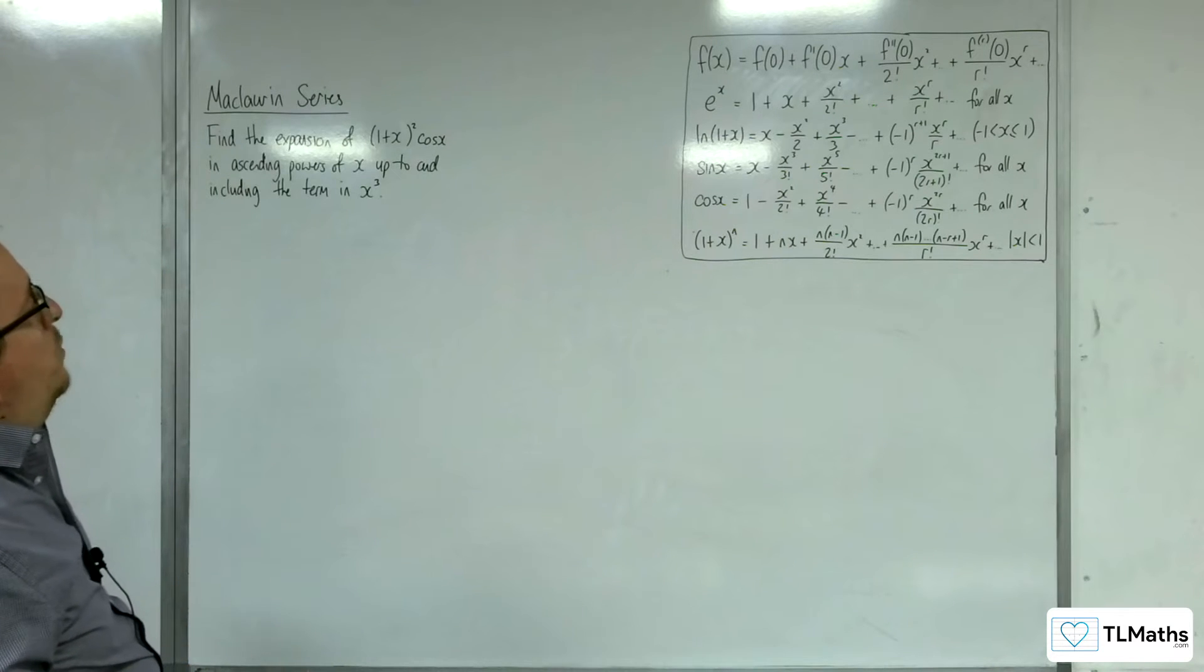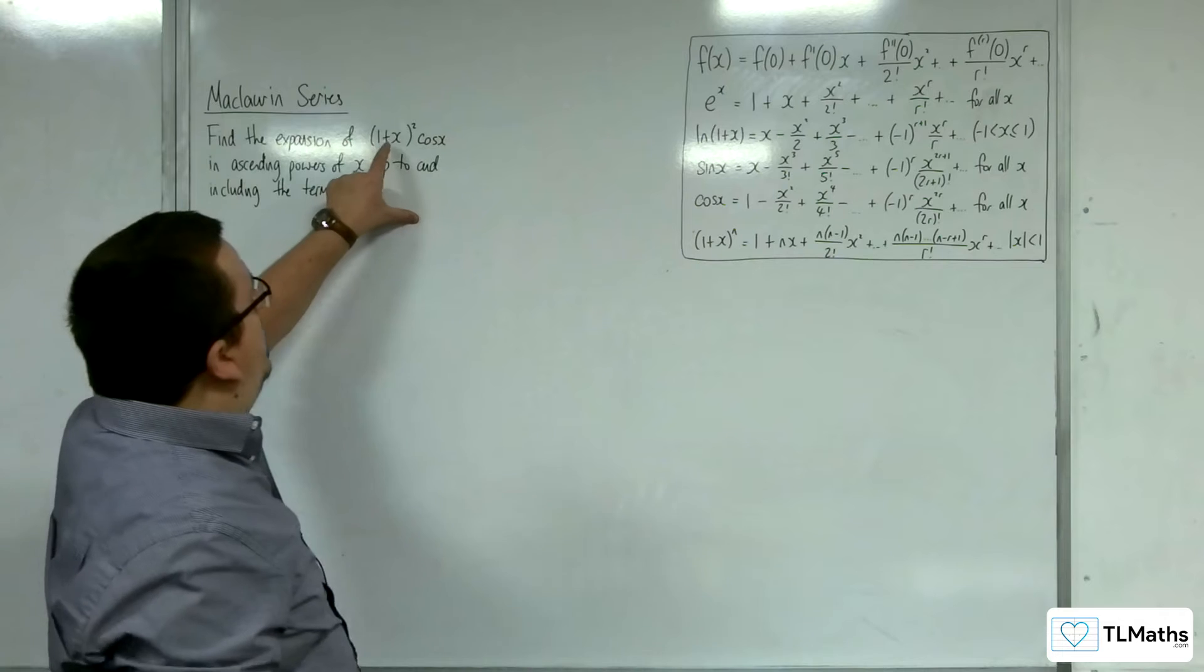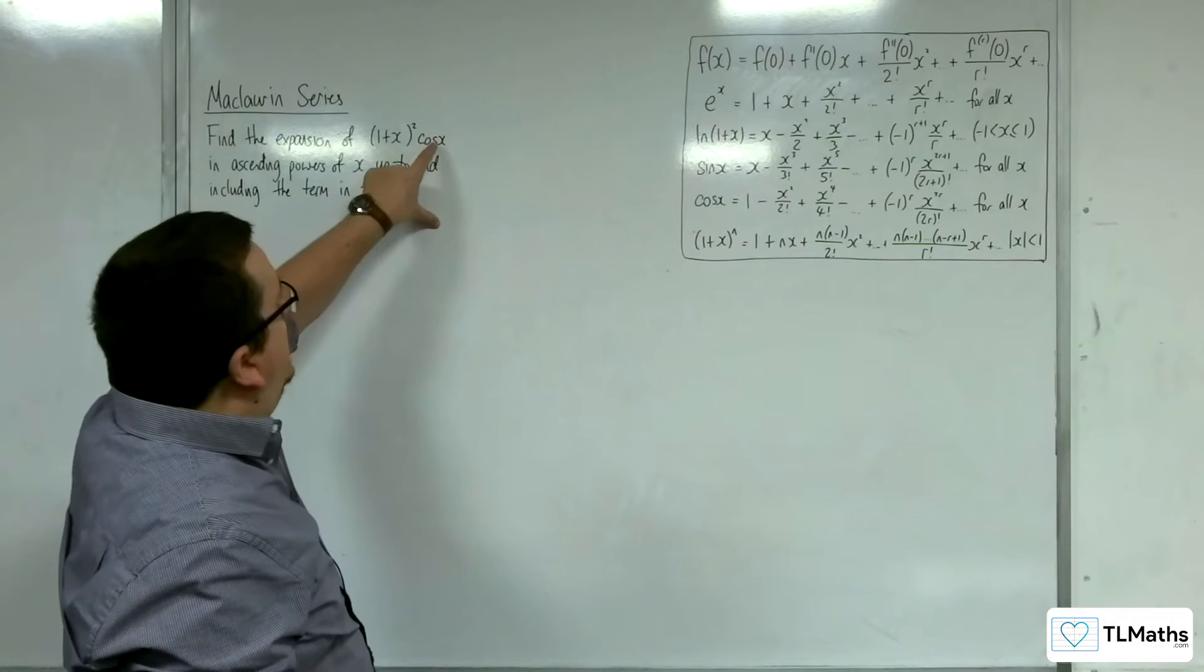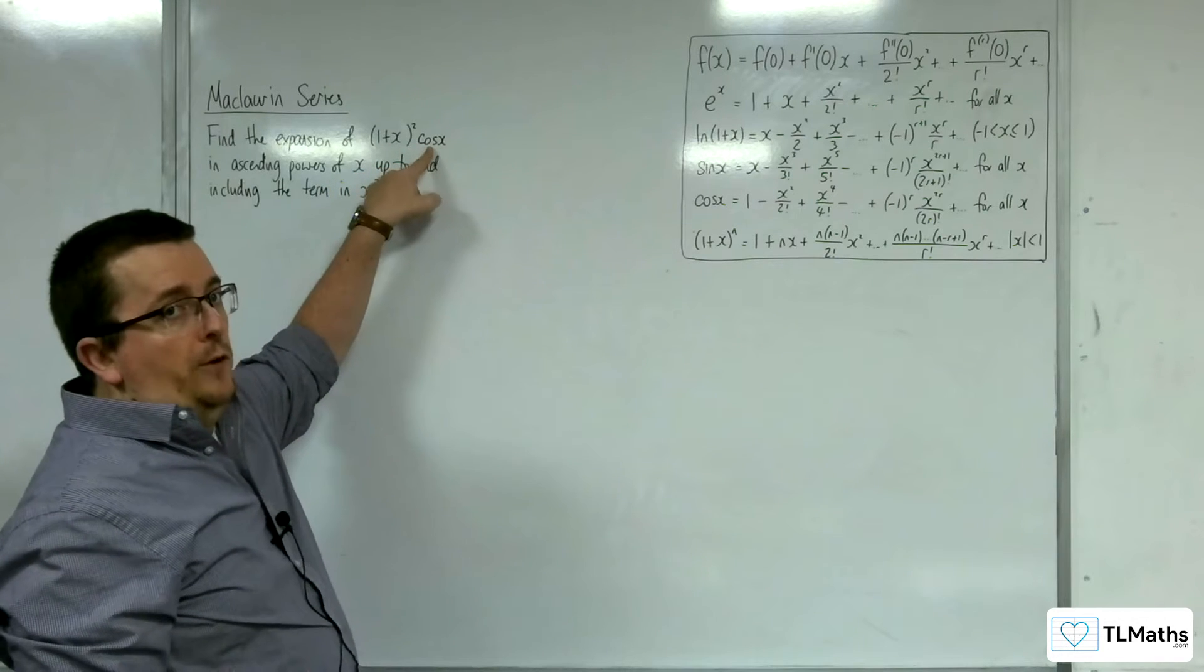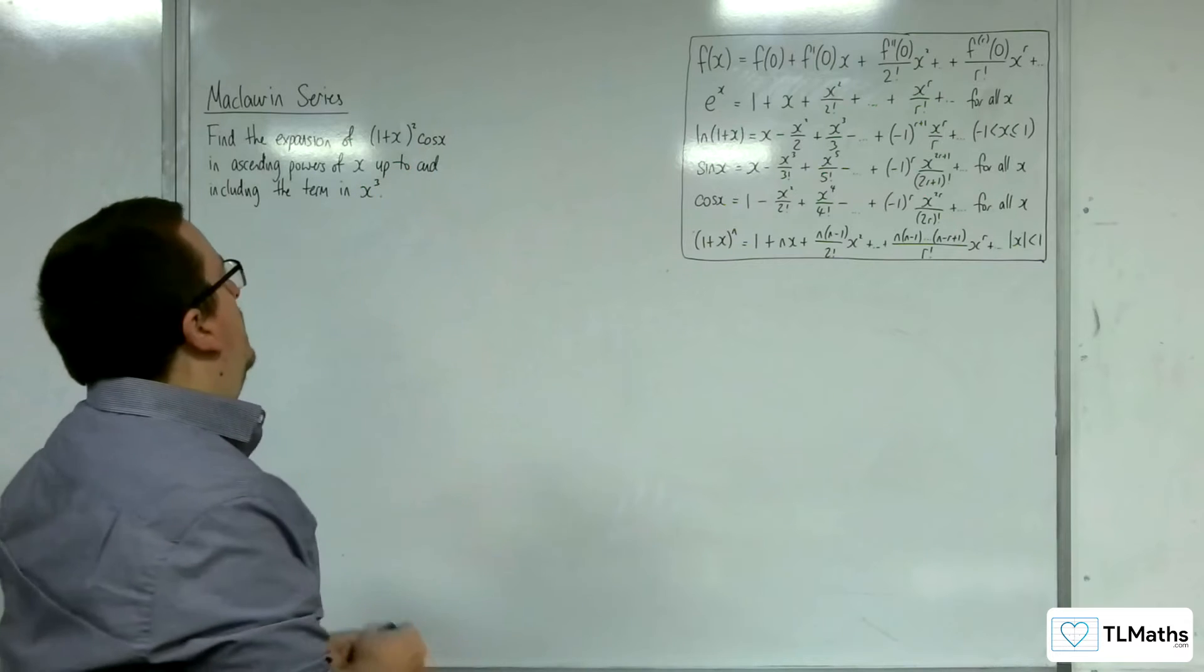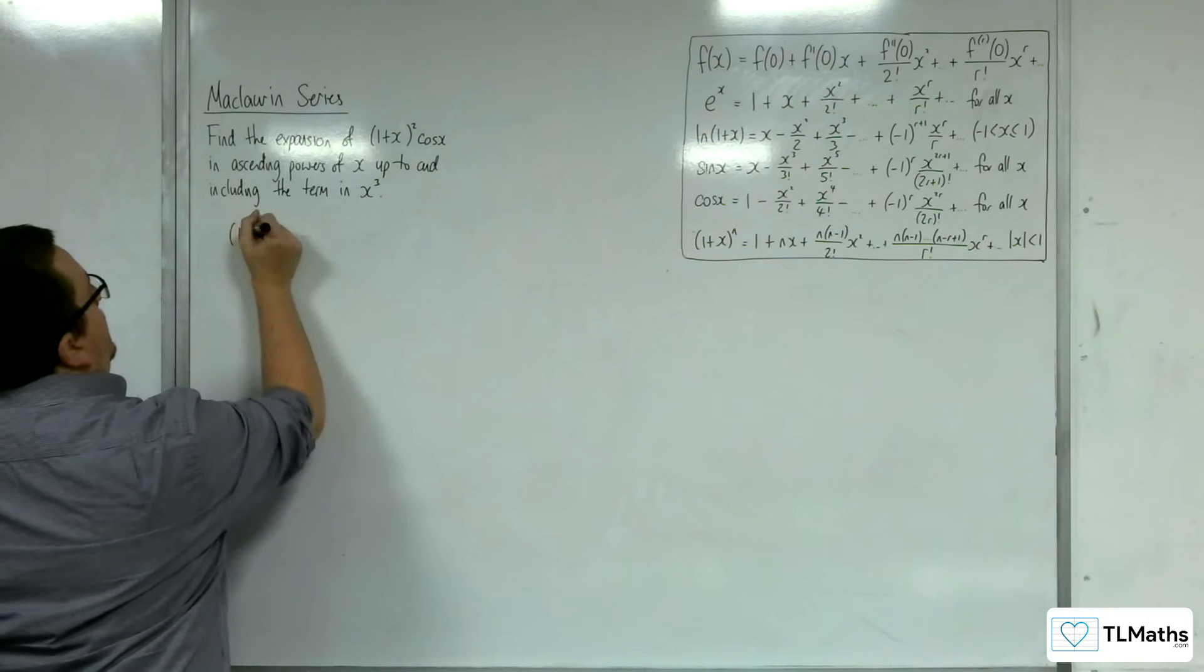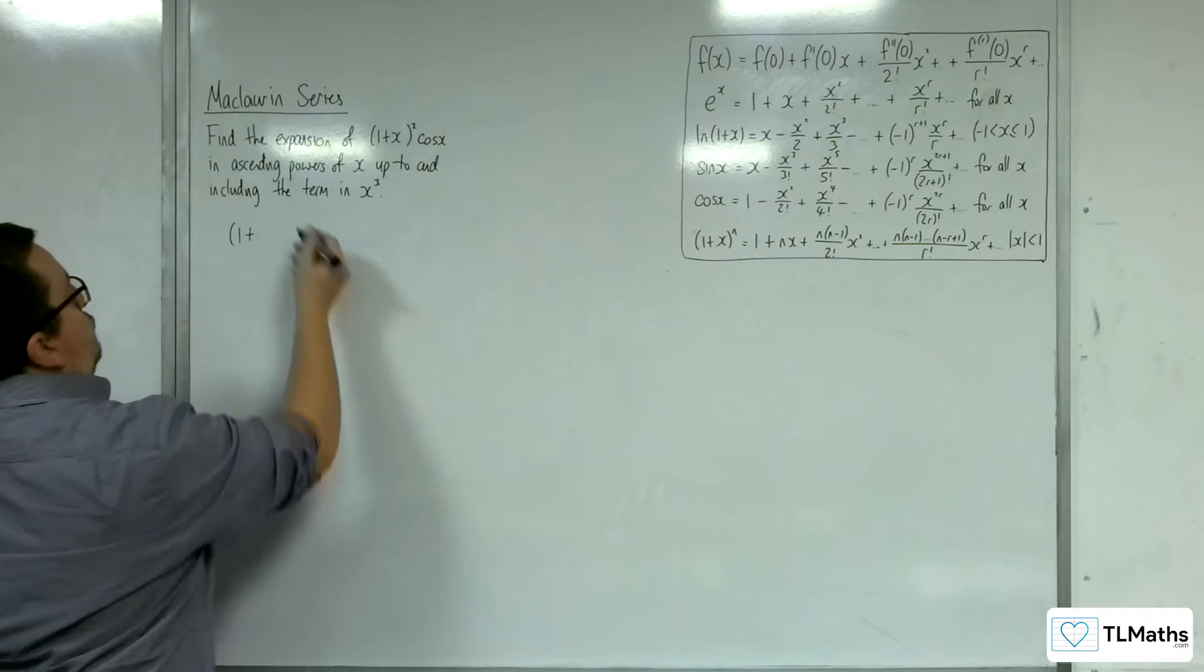Alternative to that would be to get your expansion for the 1 plus x all squared and multiply it by the expansion for cosine x. So that's the way I'm going to do this, so that I'm actually using this result.